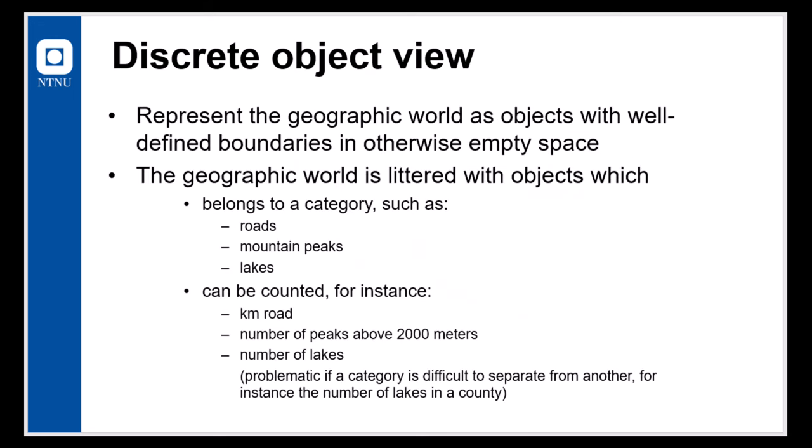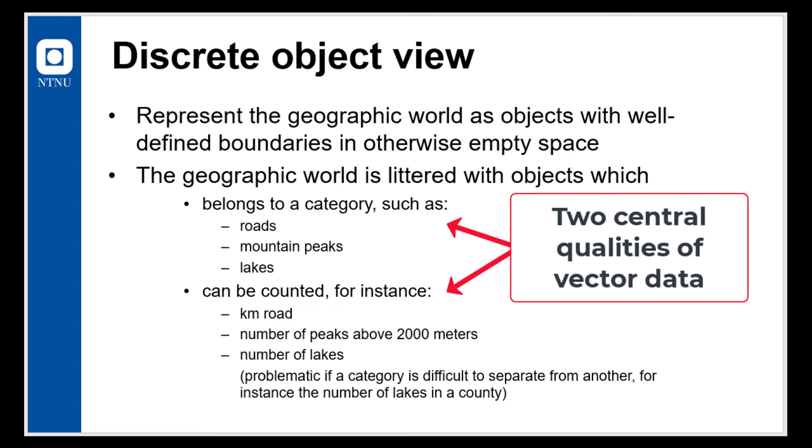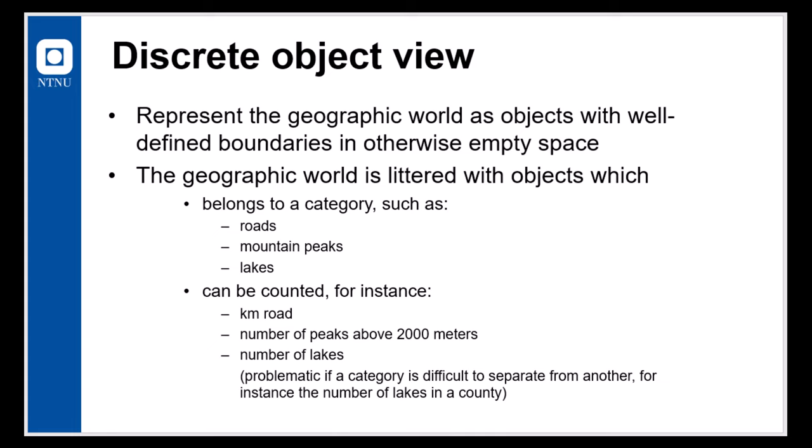So more about the discrete object view. This represents then the geographical world as objects with well-defined boundaries in an otherwise empty space. The geographic world is littered with objects which belong to a category and can be counted. These are two central qualities of the discrete object view: they belong to a category and they can be counted. The category could be roads, mountain peaks, lakes, and we can count them, for instance by kilometer of the road, the numbers of peaks above 2,000 meters, and the numbers of lakes.